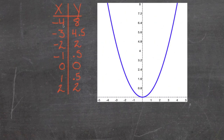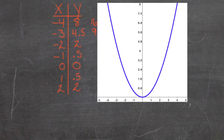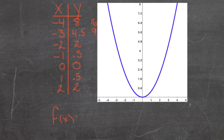It looks like if we were to plug in any number, the output is half of a perfect square. For example, 4 plugged in as a perfect square would come out as 16, and 8 is half of 16. For 3, plugged in as a perfect square it would come out as 9, and 4.5 is half of 9. And so on and so forth. So it looks like the function here is f(x) — or y if you prefer — is equal to one-half of x-squared.